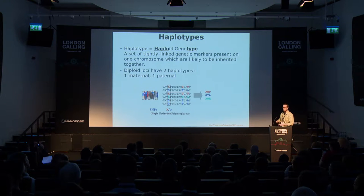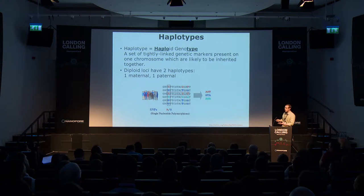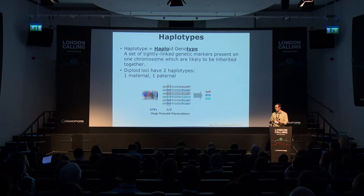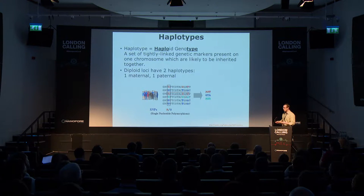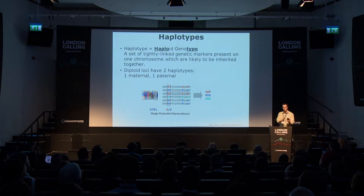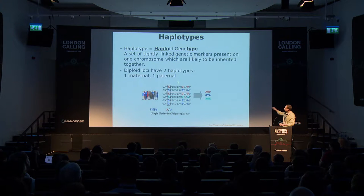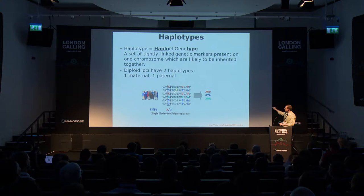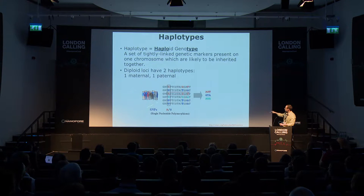When looking at pharmacogenomic variants, one thing to be aware of is haplotypes — haploid genotypes. A haplotype is a set of tightly linked genetic markers present on one chromosome that are inherited together. As humans, we're diploid — we have two copies of every gene, one from your mother and one from your father. There's a certain set of haplotypes that exist in the general population; you could be homozygous or heterozygous. For example, in this figure there are three SNPs of interest, making up individual haplotypes — and the red variants are linked, so if you have a G you'd expect a T and an A in that particular haplotype.